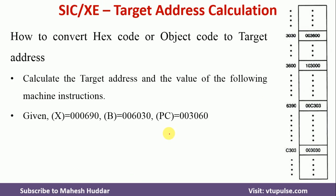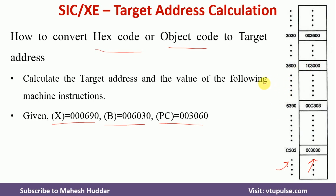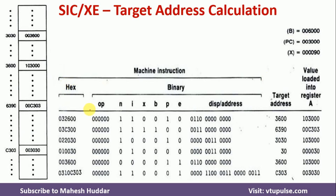Now we will take a simple example where we have been given hexadecimal codes or object codes and we want to calculate the target address. We are given the value of the index register, the base register, the program counter, and the memory locations with their values. For example, address 3030 holds value 003600, address 3600 holds another value, and so on. Given the object code, we will calculate the target address.